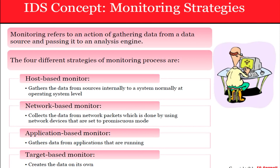IDS has four different monitoring strategies. The first is the host-based monitor, which gets all the data from sources internally to a system — normally at the operating system level. It's easier to manage and easier to get information. But it has a disadvantage: if something goes wrong with the operating system, your host-based monitor is going to be compromised as well.